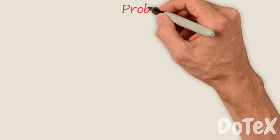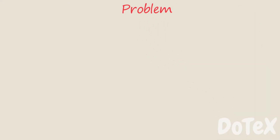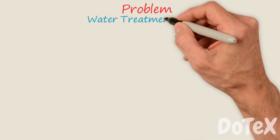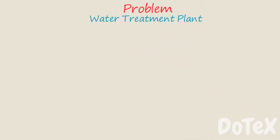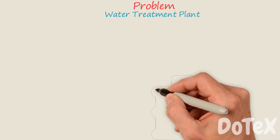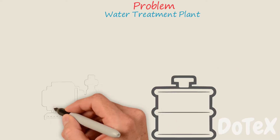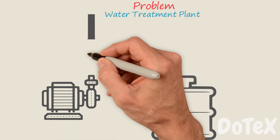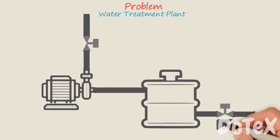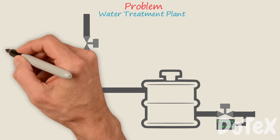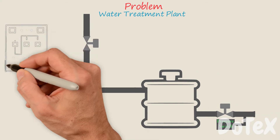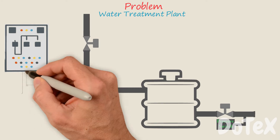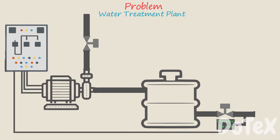Today, we have a problem in a water treatment plant. We have a tank, water pump, and pressure switch located in a separate unit near the tank, and a control panel with some cables.